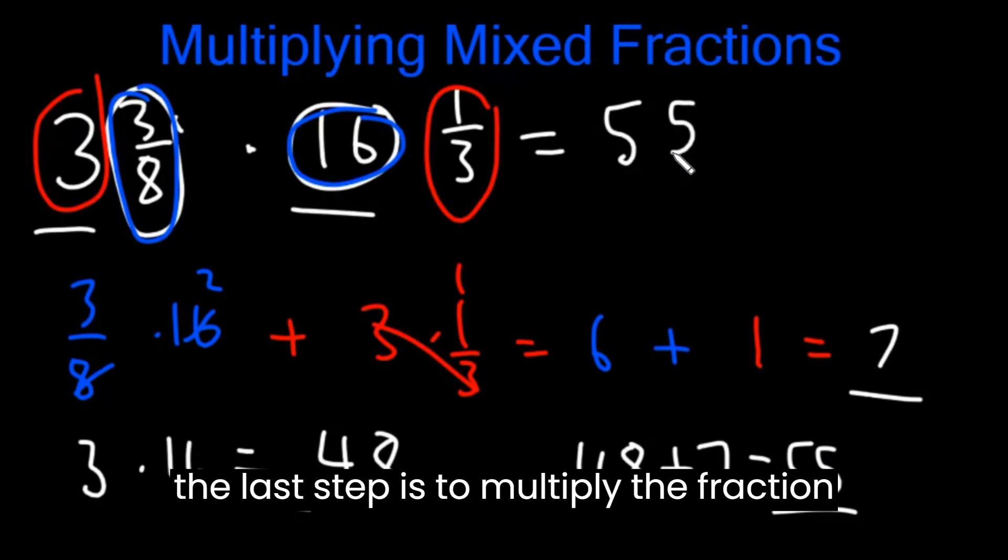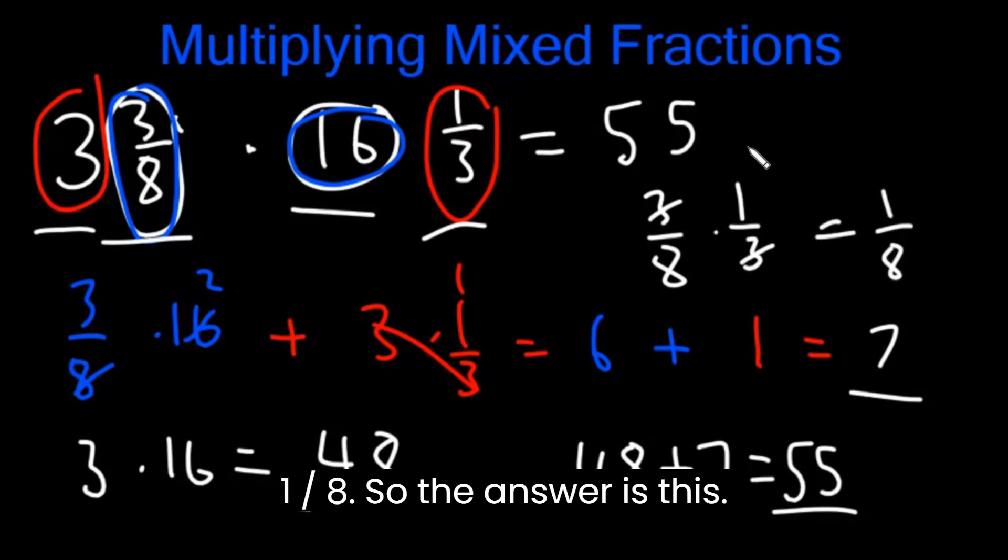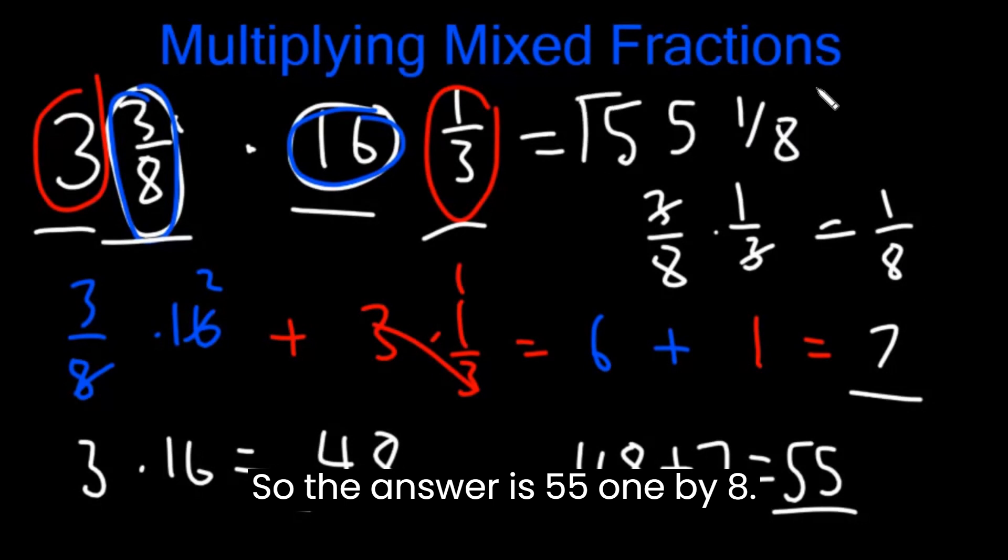And then the last step is to multiply the fraction part together. So 3/8 times 1/3. These cancel out. This is 1/8. So the answer is 55 1/8.